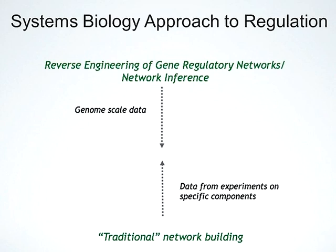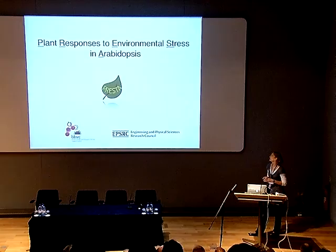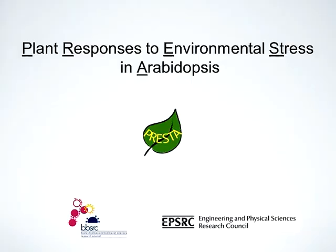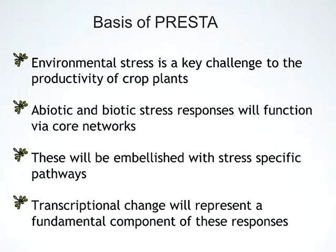We set out to elucidate what these regulatory networks were. Rather than the traditional approach of doing experiments on specific components, a number of genes had been identified which influenced susceptibility to Botrytis cinerea, and for a few we had some direct targets — but they tended to be isolated with no linking between them. So we set out to build overarching networks using a systems approach, using a reverse engineering or network inference approach to infer regulatory networks from gene expression data. This work was carried out within the PRESTA project — Plant Responses to Environmental Stress in Arabidopsis — a SABR grant funded by BBSRC and EPSRC, involving experimental and theoretical PIs at Warwick, Exeter, and Essex, along with postdocs, technicians, and PhD students doing both computational and experimental work.